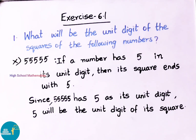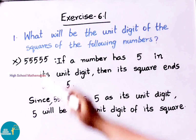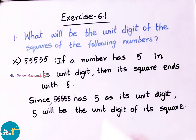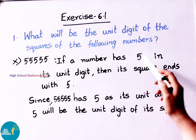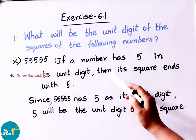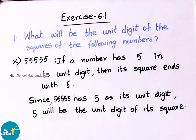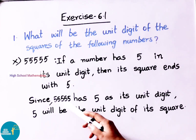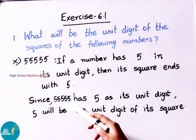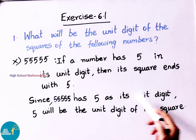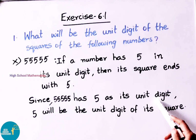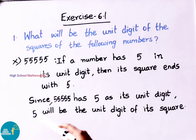See now the tenth sum — 55555. If a number has 5 in its unit's digit, then its square ends with 5. Since the number 55555 has 5 as its unit's digit, 5 will be the unit's digit of its square.